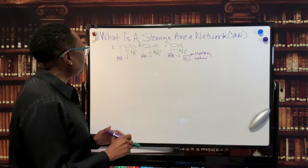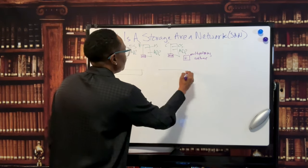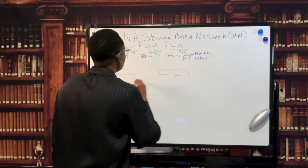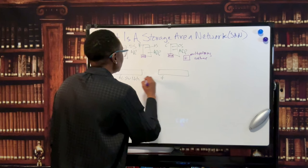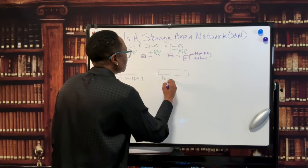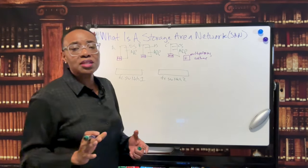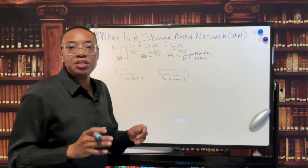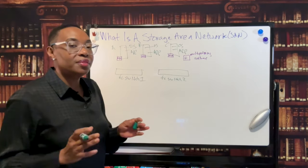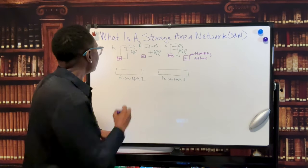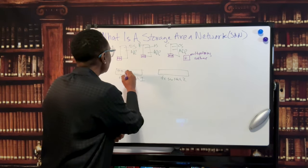Okay, and then the second component that makes up a SAN are fiber channel switches. And fiber channel switches transfer fiber channel traffic on the SAN. And you always want, for best practices, they're not connected to each other, they're not even aware of each other, but they're there for redundancy purposes.